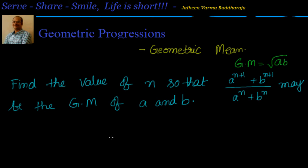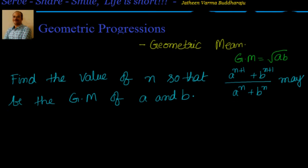We are solving examples as part of geometric progressions. Let's look at this one: Find the value of n so that a to the power of n plus 1 plus b to the power of n plus 1, divided by a to the power of n plus b to the power of n, may be the geometric mean of a and b.